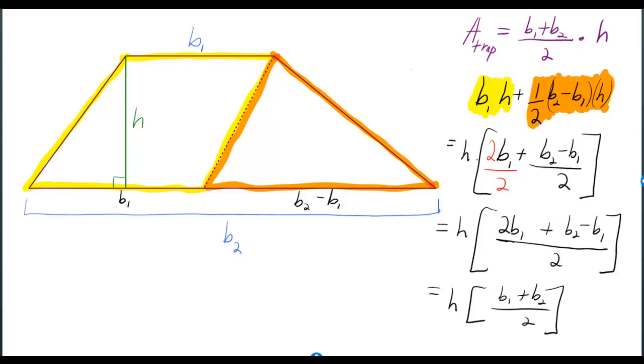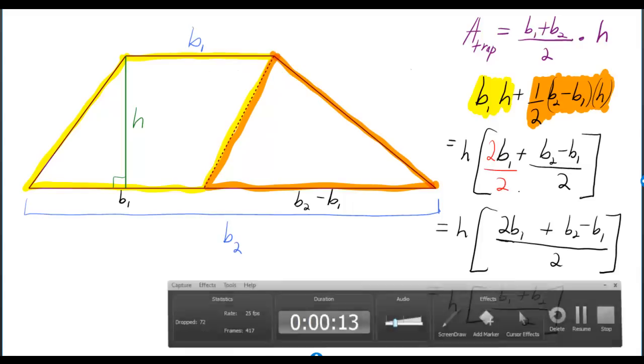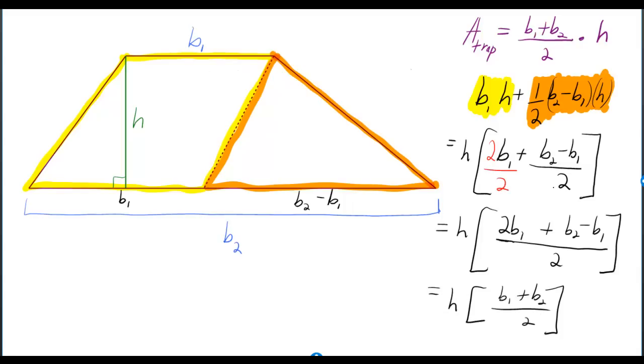Then you can factor out the H, and you get B1 plus B2 minus B1 over two. But then you can multiply B1 by two and divide by two, that's what's in red right there, so that way you have a common denominator. And then you add the two tops, and you get two B1 minus B1, and that just gives you a single B1. And then you still have plus B2 over two times the height, which is exactly what we were trying to prove at the top.